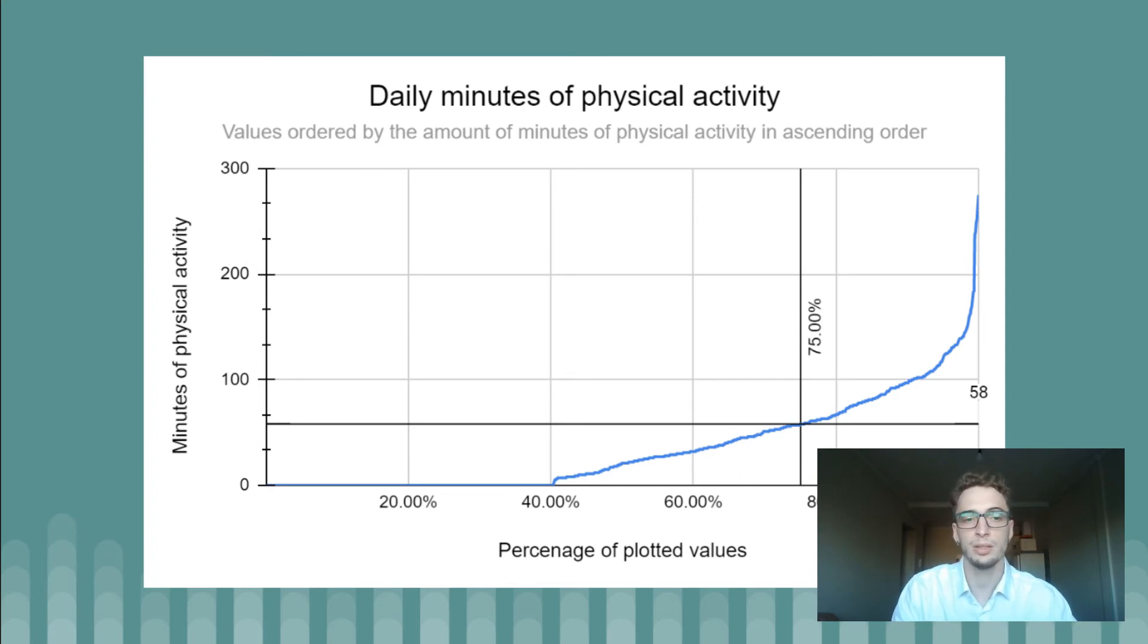Now understanding this graph, the intersection of the black lines indicates that the top 25% of the values are equal to or greater than 58 minutes, which means that one out of four days, almost two days a week, the users in the sample train at least almost one hour.